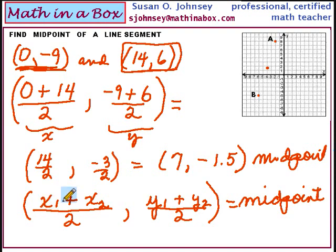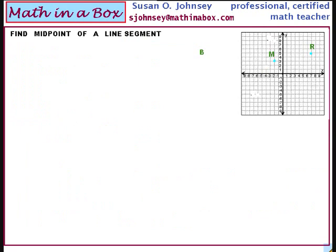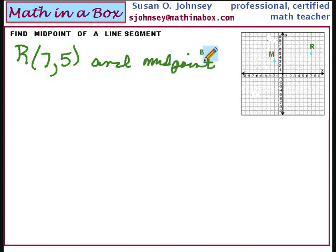If you are in algebra 2 or perhaps in honors algebra then you may want to watch the next example. Now if you are just in pre-algebra or algebra 1 then you may stop. This example would be for an honors student or an algebra 2 student. In this problem I'm going to give you a point R as 7, 5 and I'm going to give you the midpoint. The midpoint is negative 2, 3.